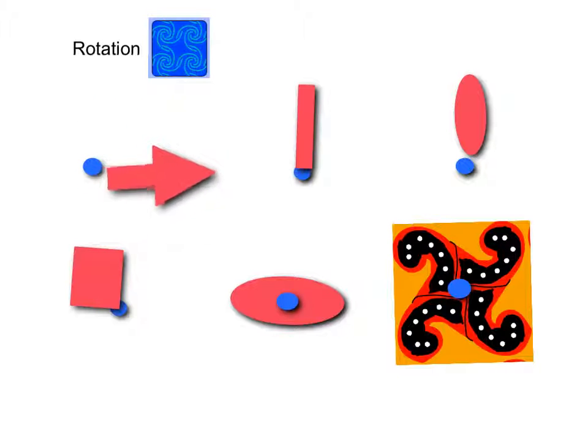I just rotated that shape 45 degrees. Now I'm going to rotate this rectangle 180 degrees. So there's 180.